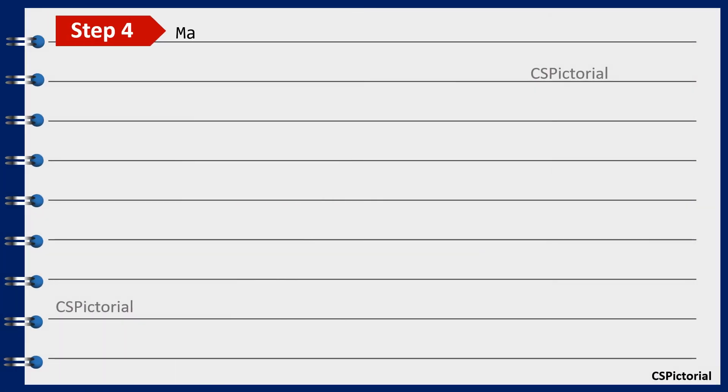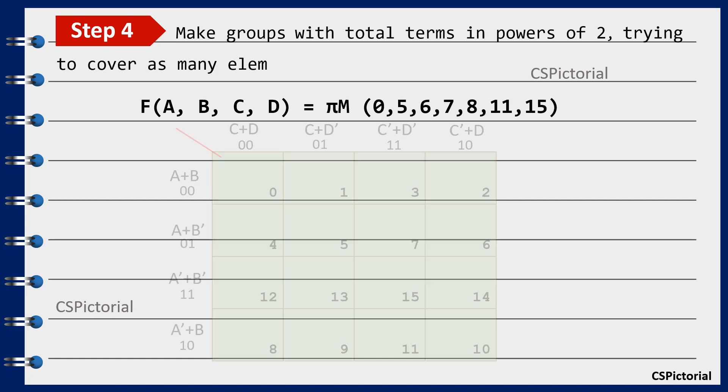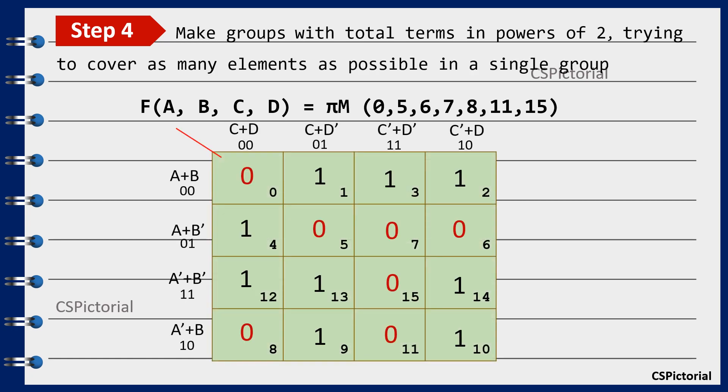Make groups. Again the total terms should be in powers of 2 and try to cover as many elements as possible in a single group. Continue making groups until all zeros get covered. Make larger groups, overlap groups and wrap around the table wherever possible.